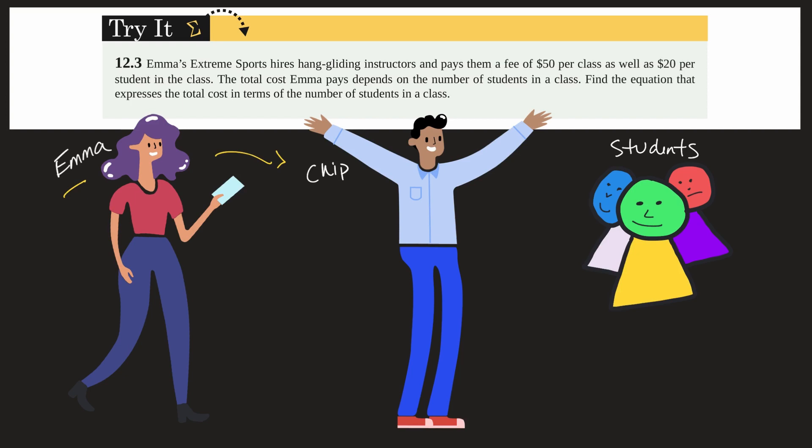So Emma is a businesswoman here and she's going to hire Chip to teach the class. So right off the bat she's going to give him $50 for the class right here. So $50 right to Chip. And then she's also going to give Chip $20 per student that is enrolled in the class.